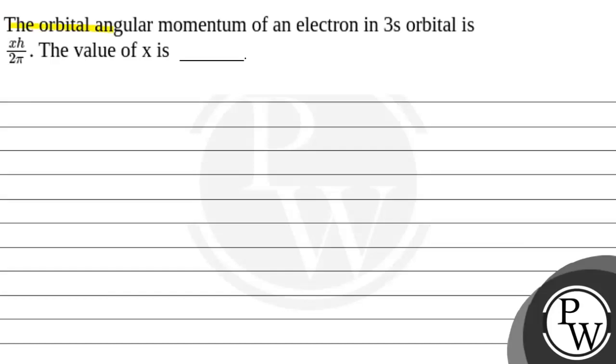Hello, let's read this question: the orbital angular momentum of an electron in 3s orbital is xh upon 2π. The value of x is dash.